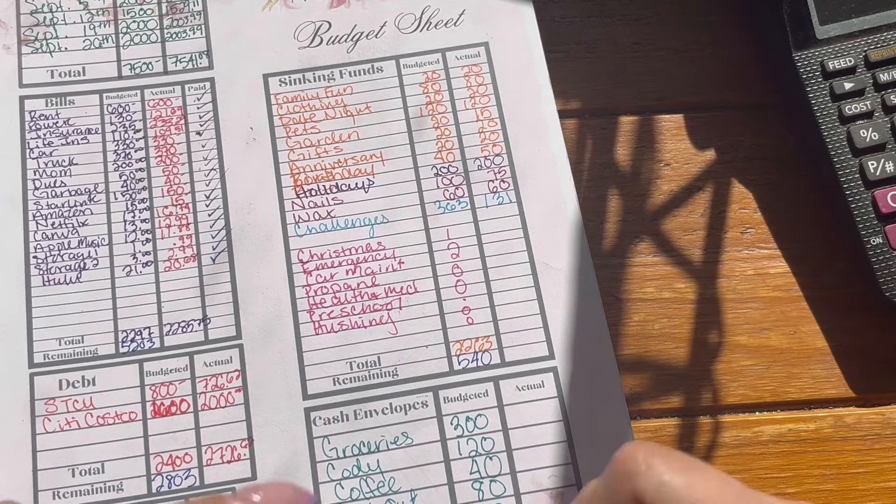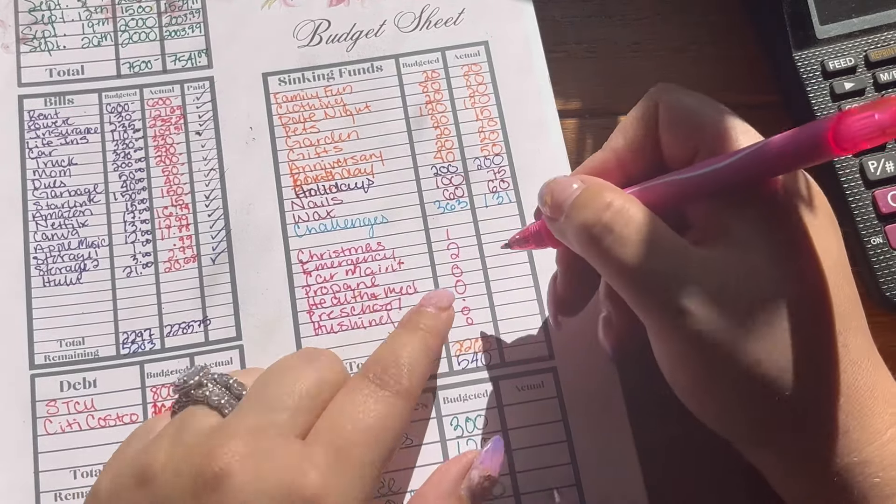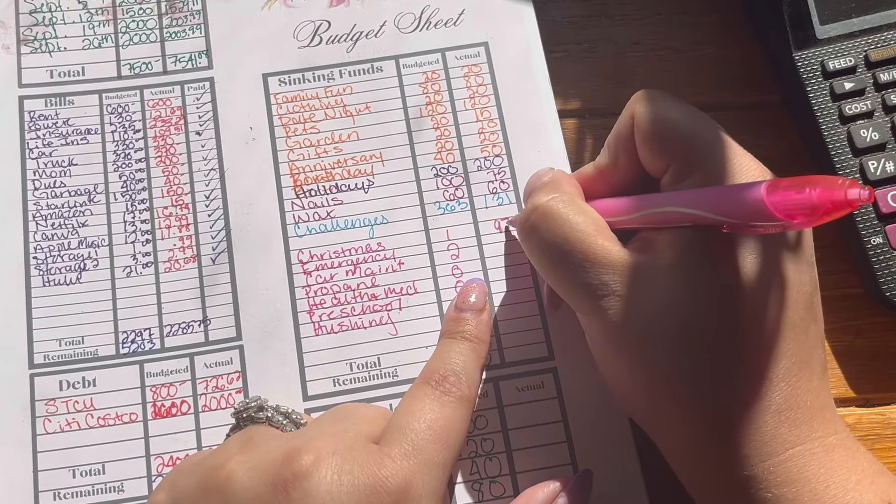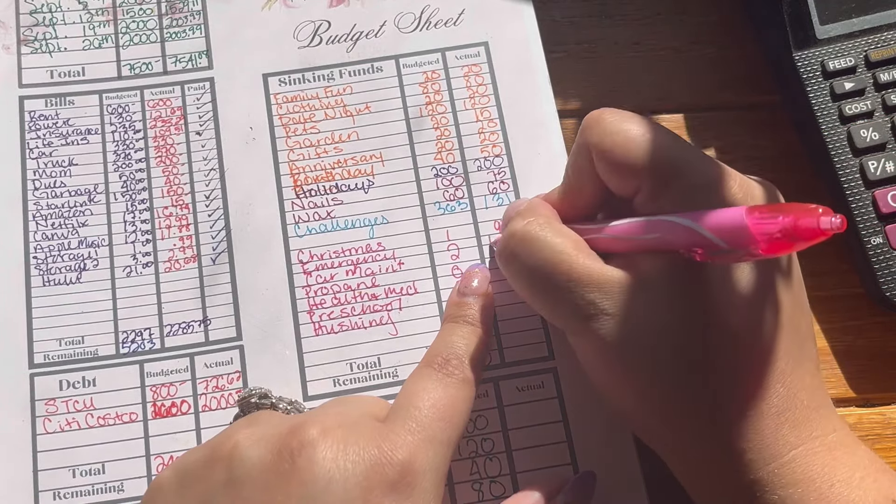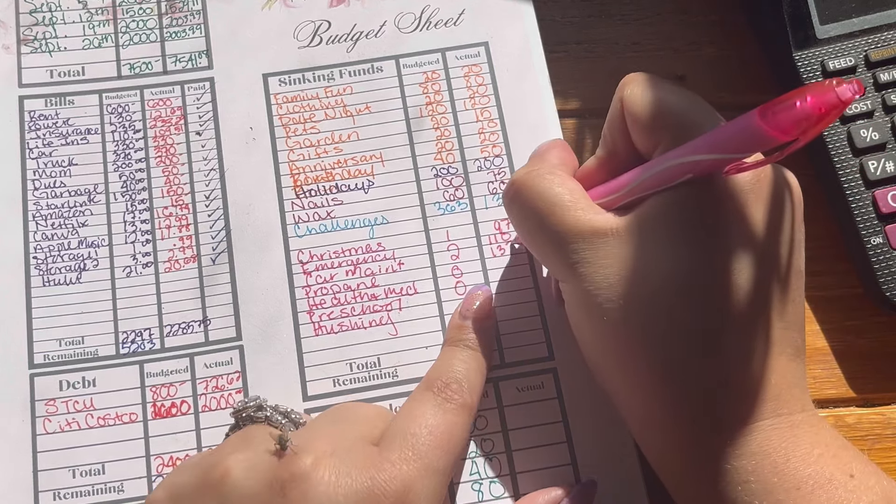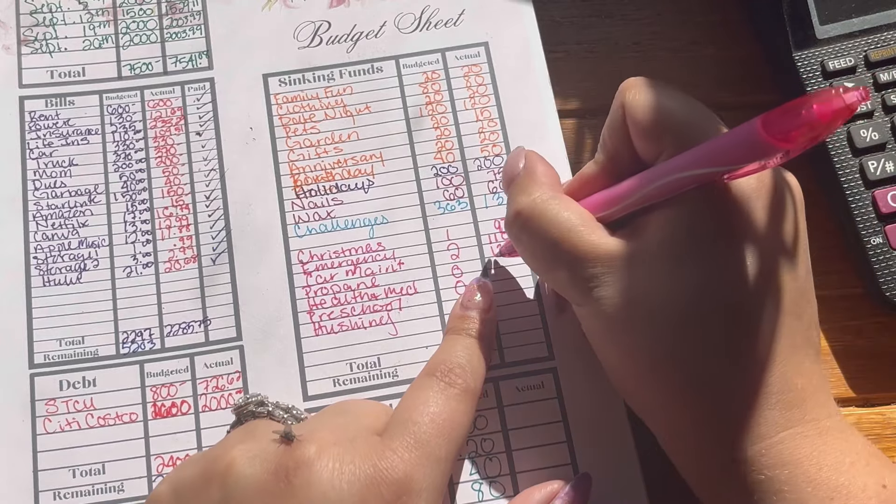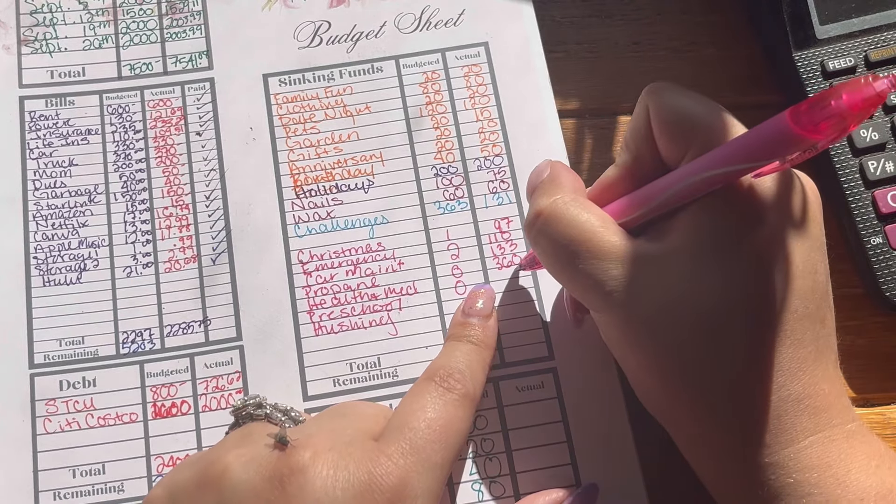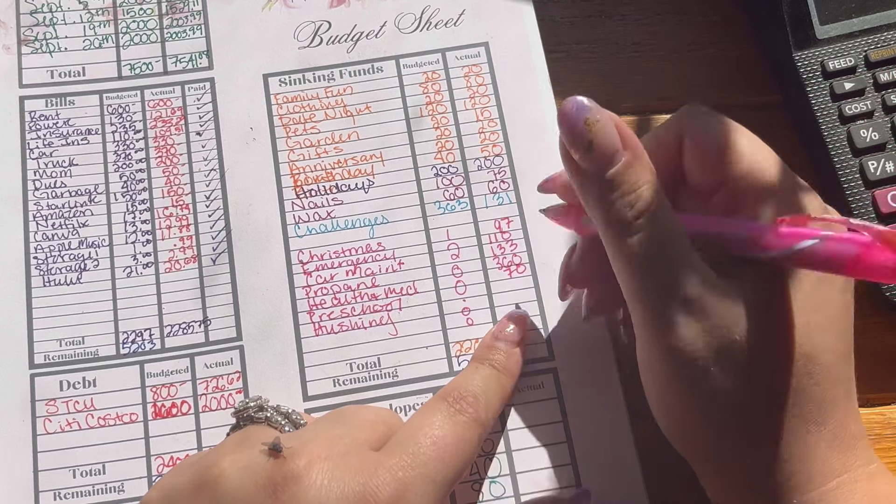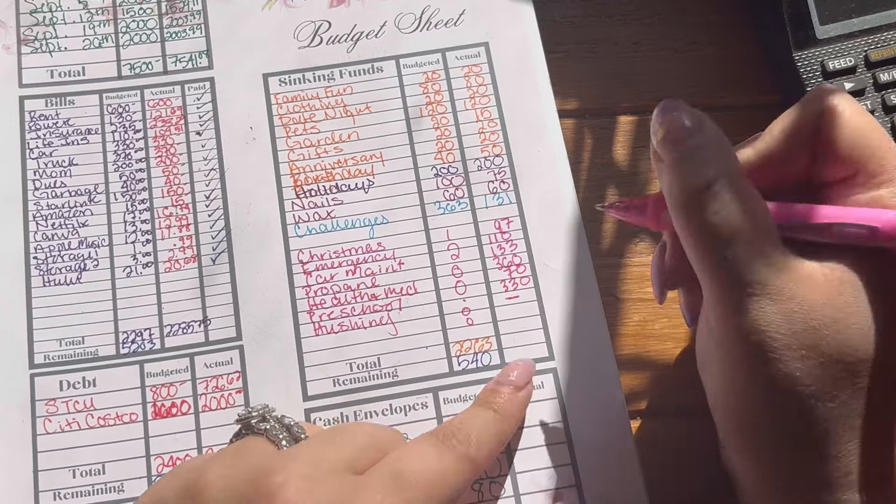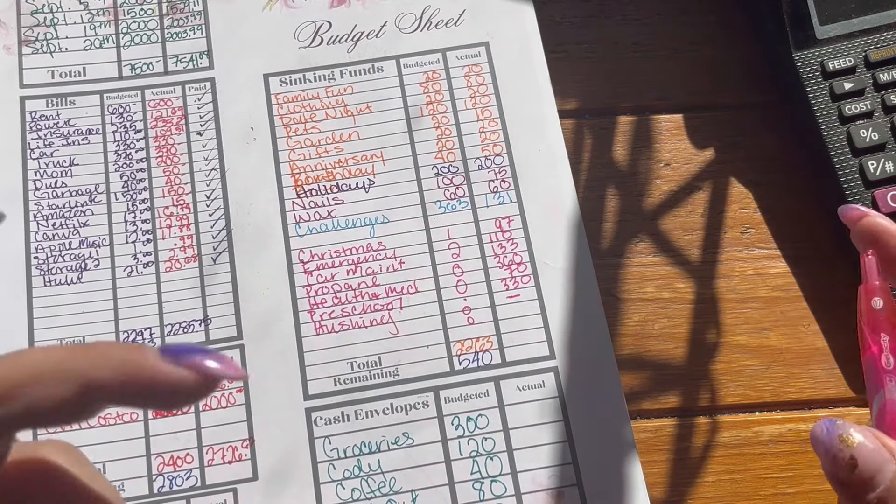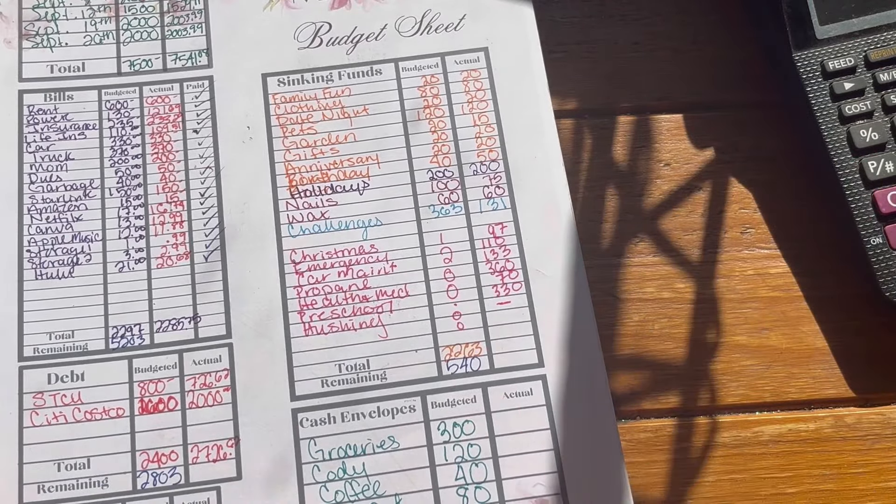All right, now jumping down into our long-term savings. So we didn't meet our goal of 1,200. We only did 1,100, which is fine. But we had 97 to Christmas. We had 110 to emergency. Car maintenance got 133. Propane got 360, which was our big one. Health and medical got 70. Preschool got 330, and my husband's hobbies got nothing. And that equals out to 1,100, which is totally fine.